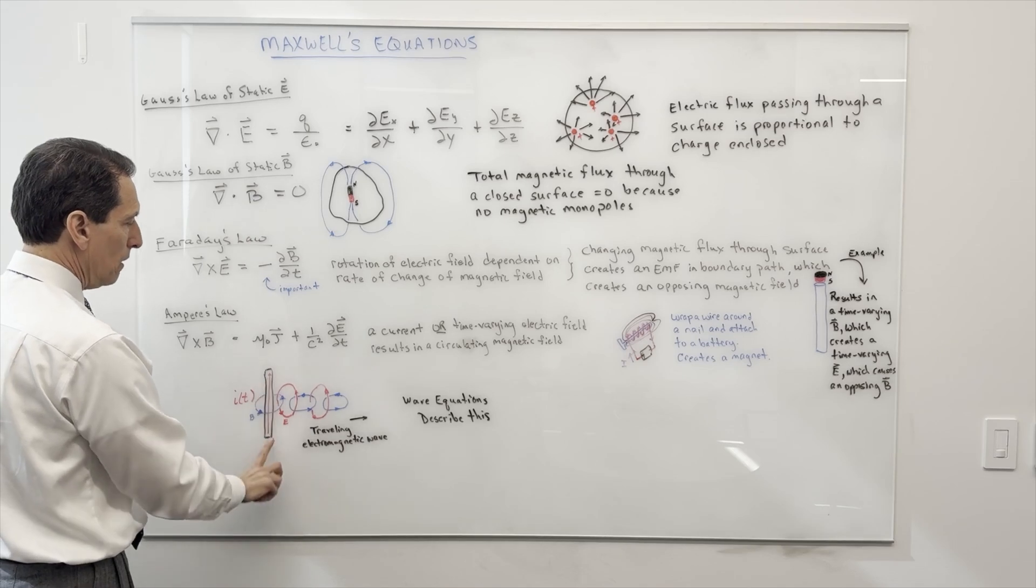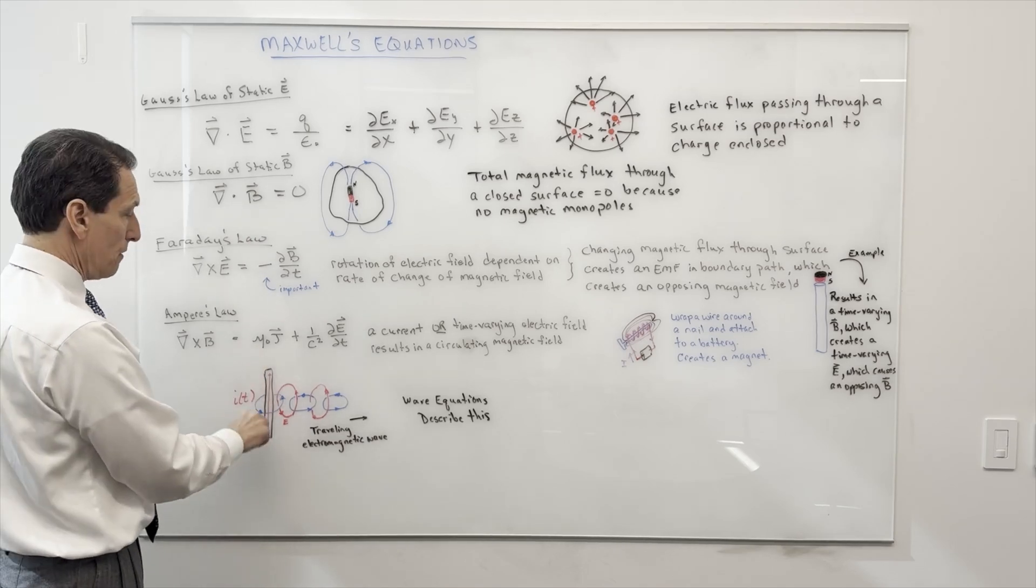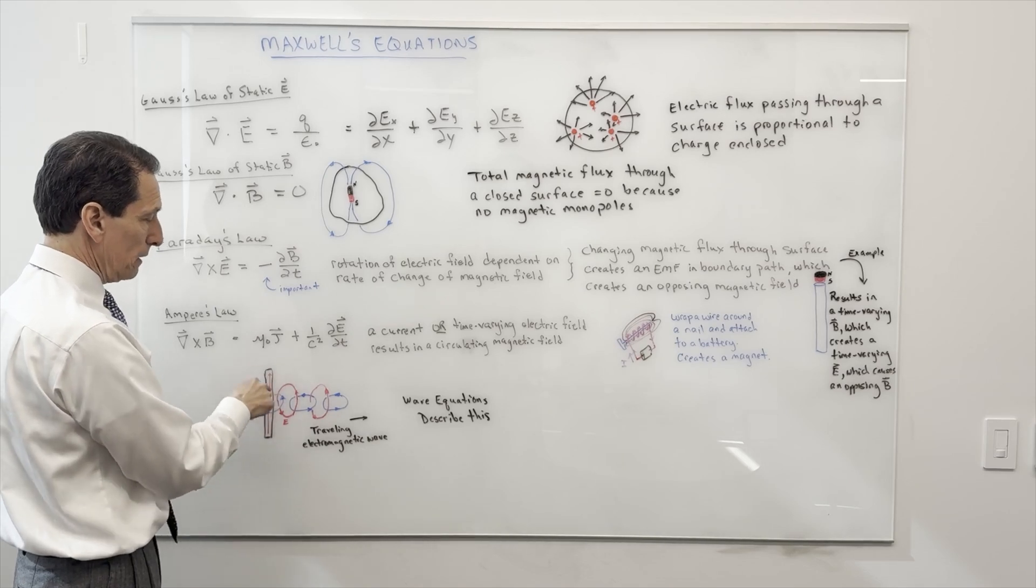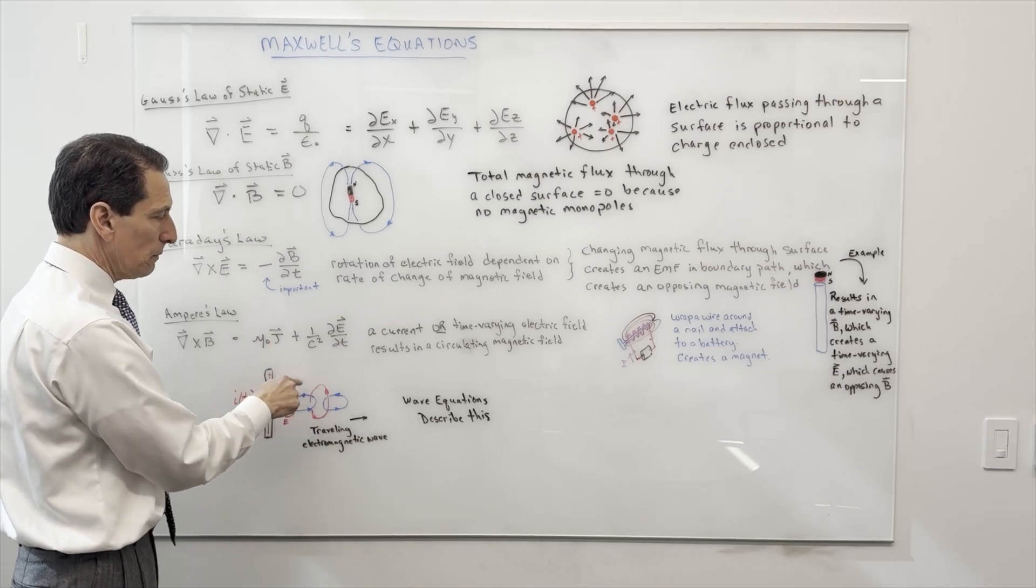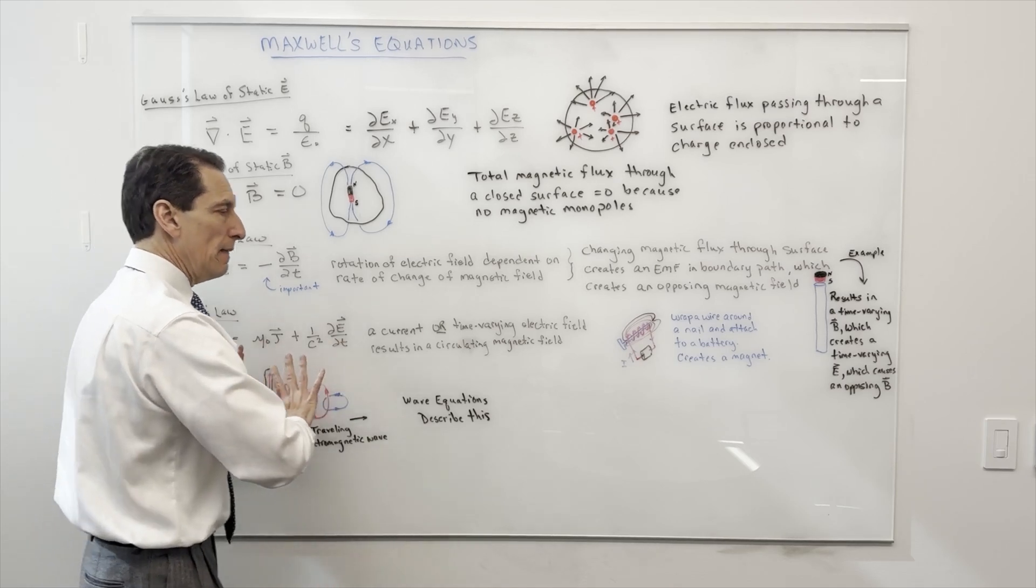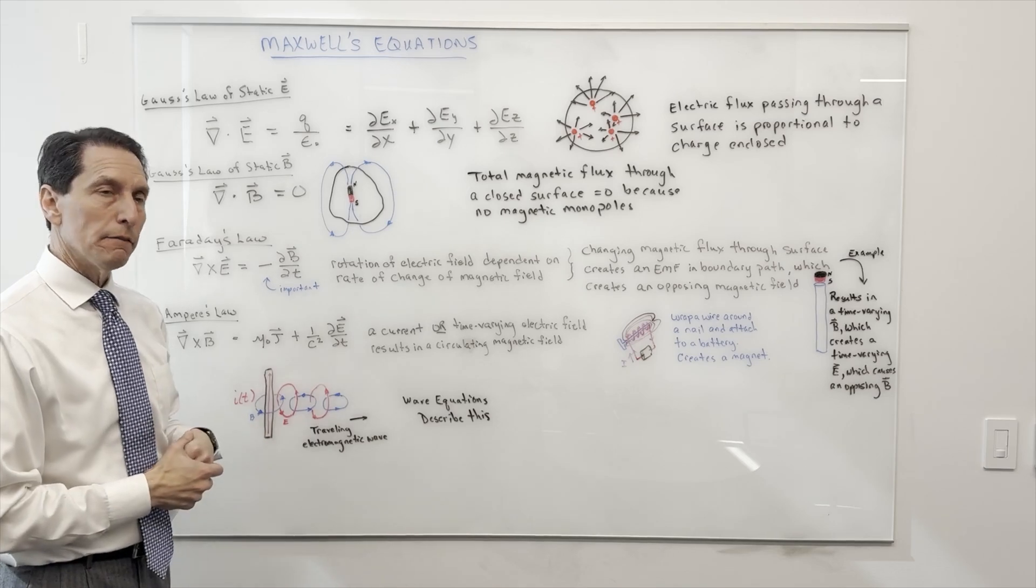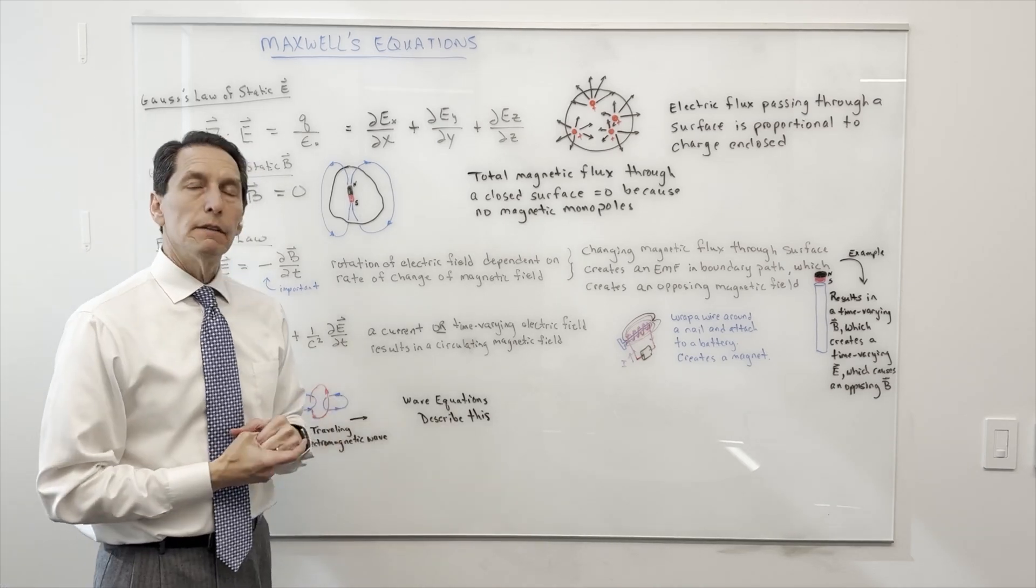One thing that they lead to is propagating electromagnetic waves. The way that works is you drive a current up and down, so it's time-varying in some conductor. That generates a magnetic field around it which generates an electric field which generates a circular magnetic field, and this goes on and on. That creates wave propagation, the traveling electromagnetic wave, and those are described by some very specific equations called wave equations.